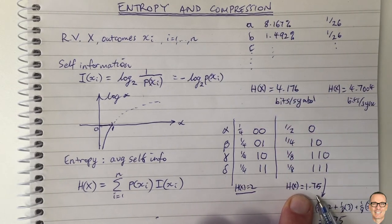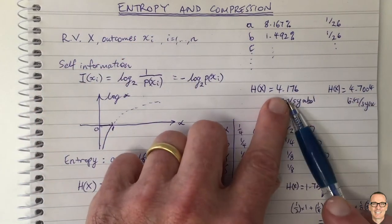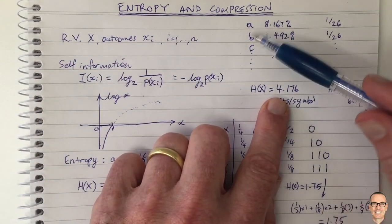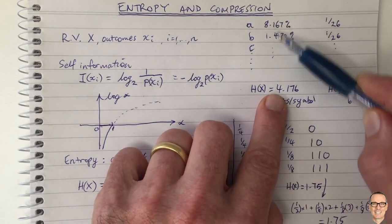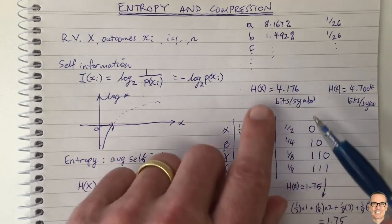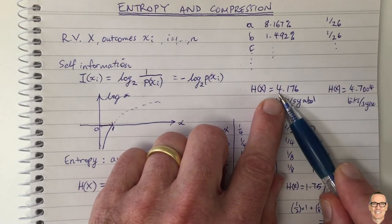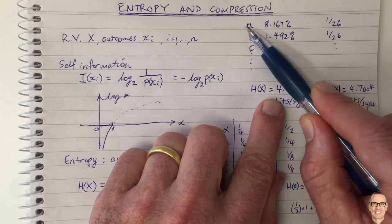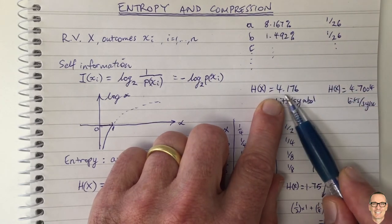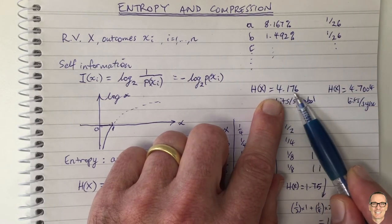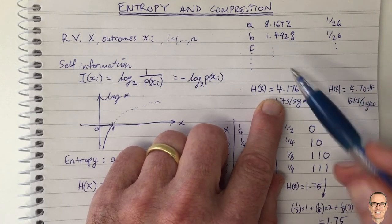So just one last bit is to step back to the English language and look at this. Well, this is what you can do with compression. Because the letters don't appear equally likely, you are able to send English language using an appropriate code book, you could get away with sending on average only 4.176 bits for every symbol for every letter. So every time you want to send a letter, you would only have to use on average 4.176 bits.